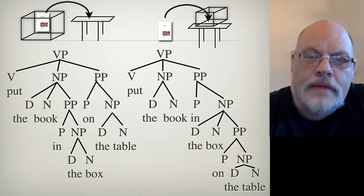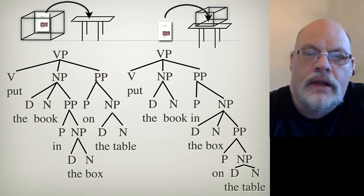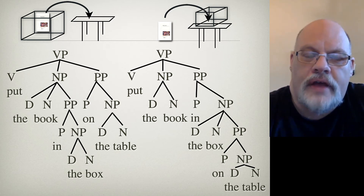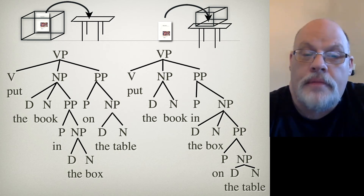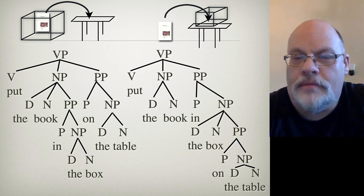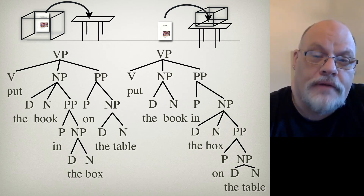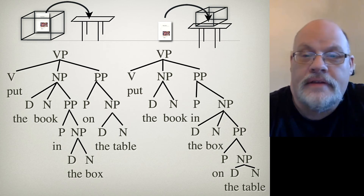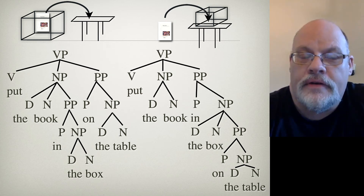Why is this possible? It's because English has the property that prepositional phrases can sometimes modify nouns, but they can also modify verbs. In a sentence like this, the prepositional phrase can either attach to the noun or to the verb.